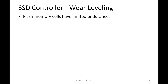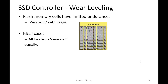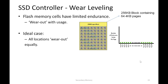Wear leveling is tightly coupled with FTL because flash memory cells have limited endurance — they wear out with usage over time. Ideally, we would expect all flash memory cells to wear out more or less equally. For example, if we have a logical block with 256 KB size, it would have 64 4 KB pages. If the number of writes to each of these pages is more or less the same, then the endurance cycles per page will be in the same range — meaning all of them are dying more or less equally.